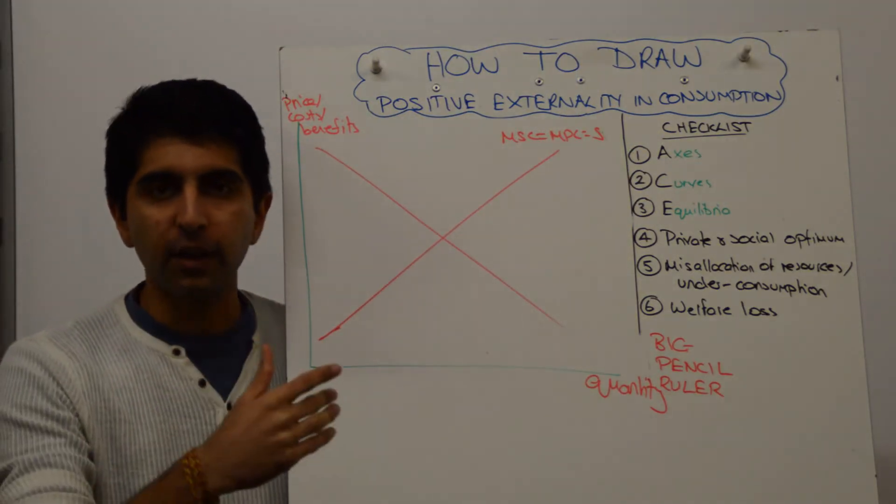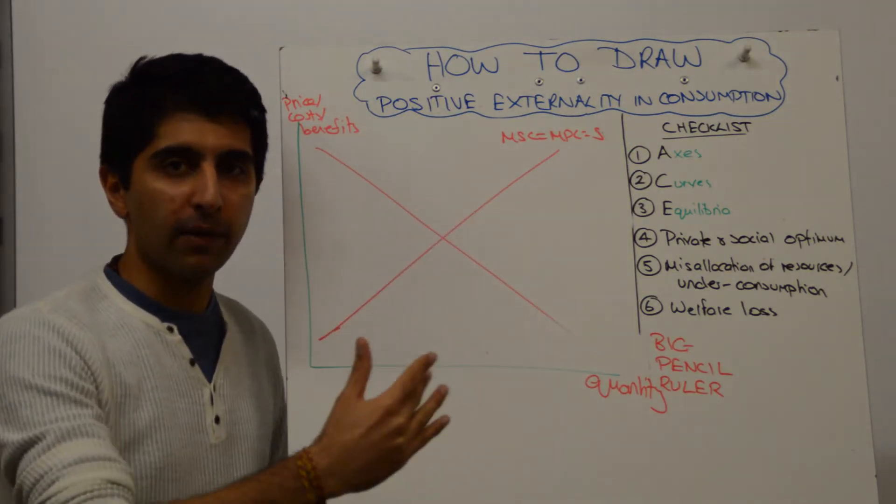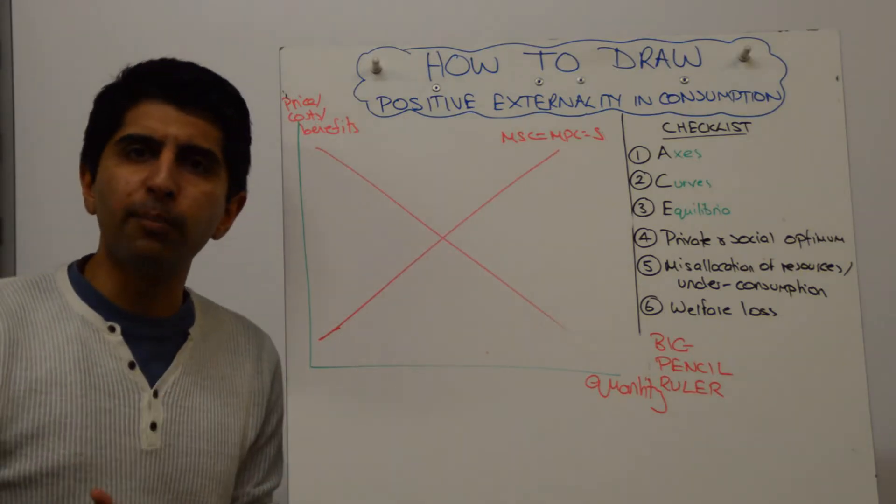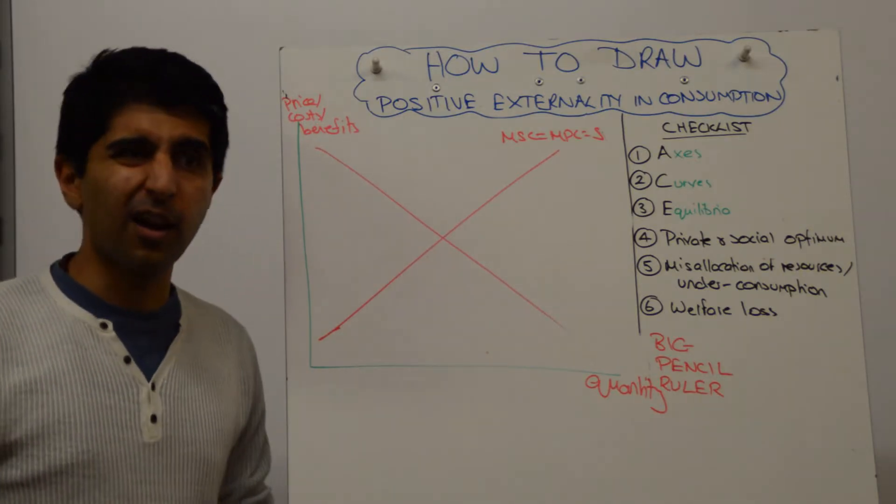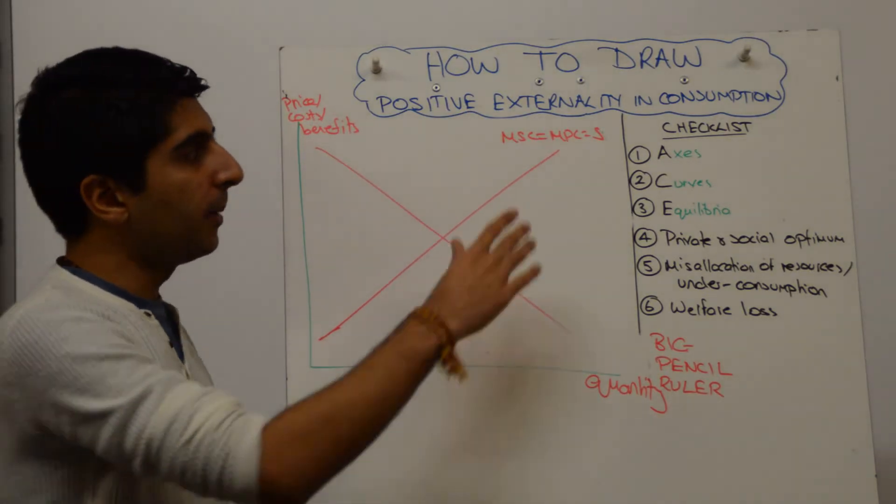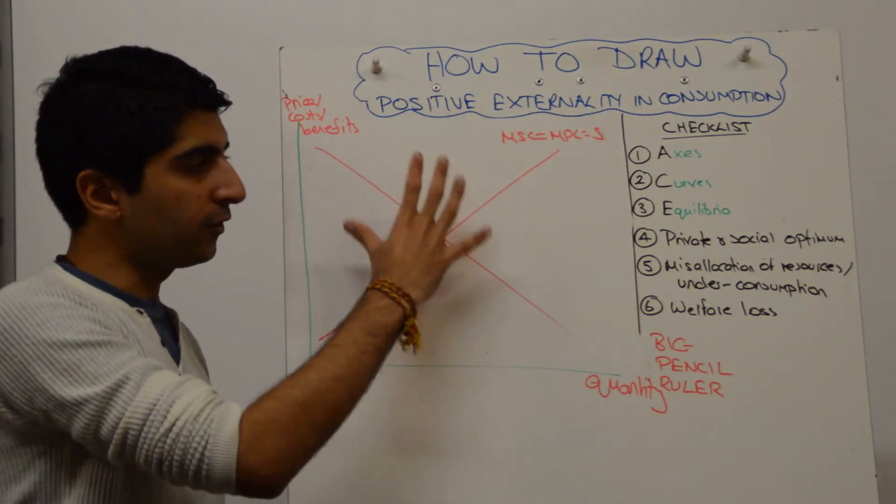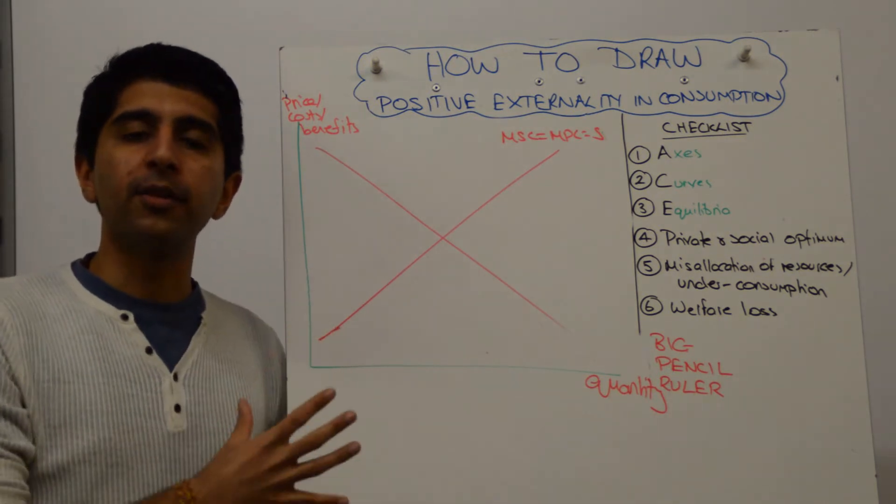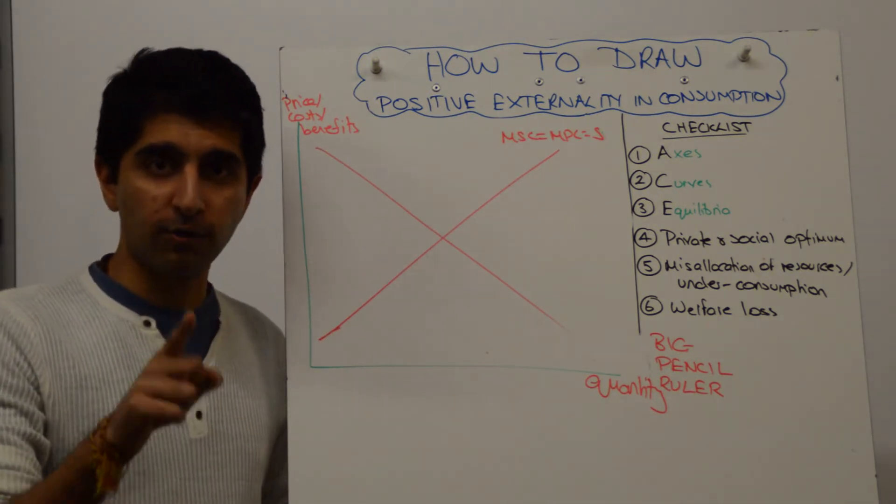So, the social benefit curve is to the right of the private benefits curve, implying that there are more benefits than society actually realize, or that consumers actually realize when consuming this good. Now remember, positive externality in consumption, yes, on its own this is the diagram, but this can also be the diagram for a merit good. Don't forget that.